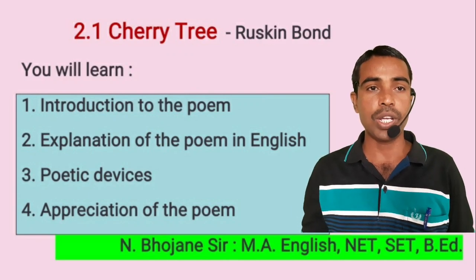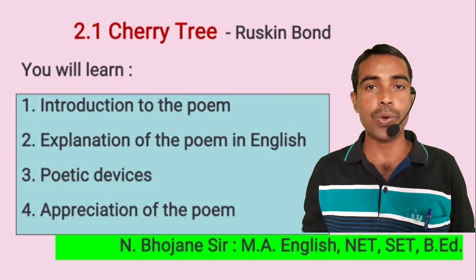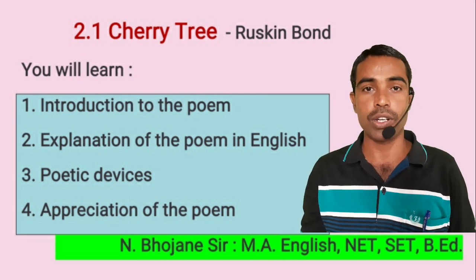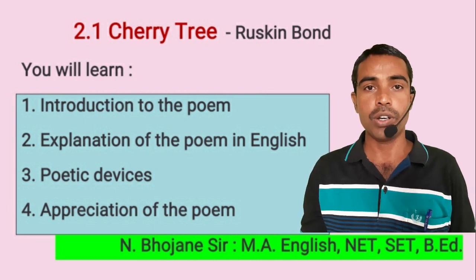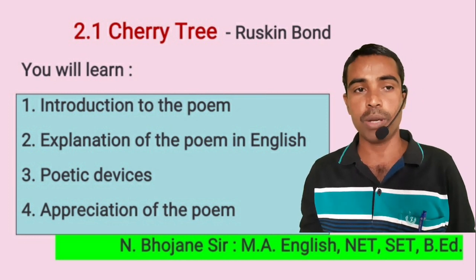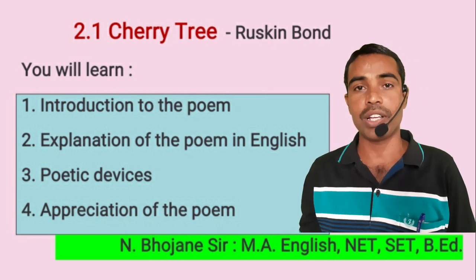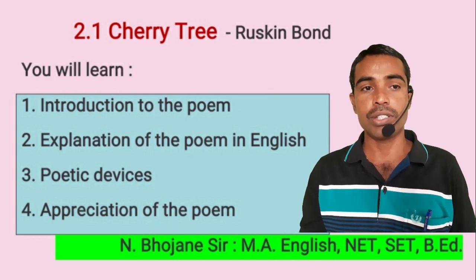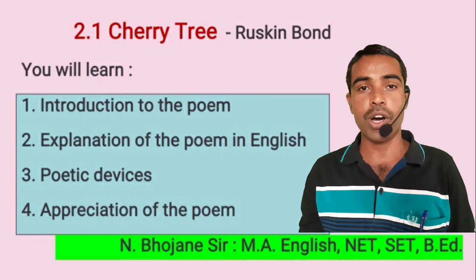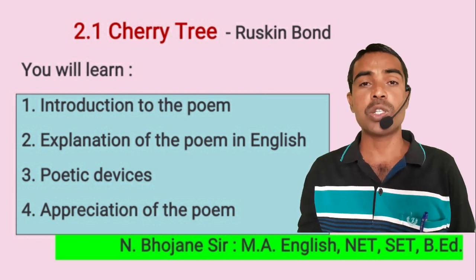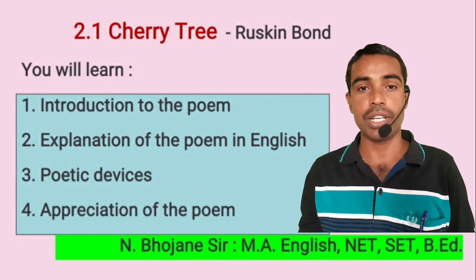Dear students, today we are going to learn a poem, Cherry Tree, written by Ruskin Bond. Ruskin Bond wrote a lot of short stories, essays, poems and novellas. In 1992, he received the Sahitya Akademi Award for English Writing in India. He was also awarded the Padma Shri in 1999.